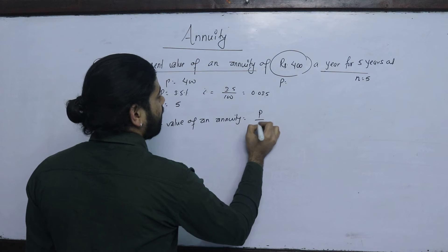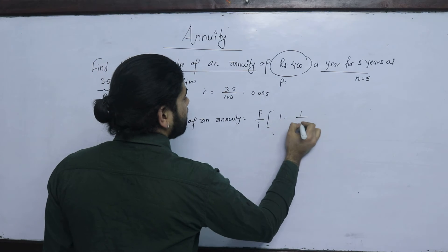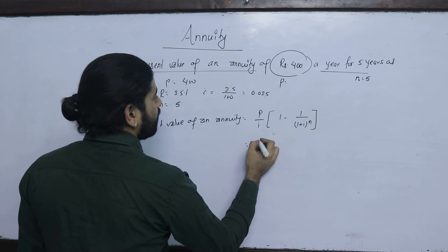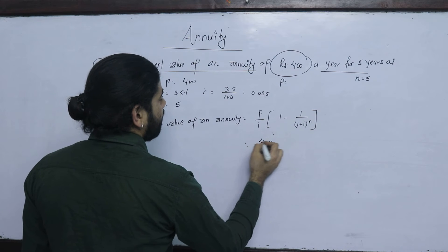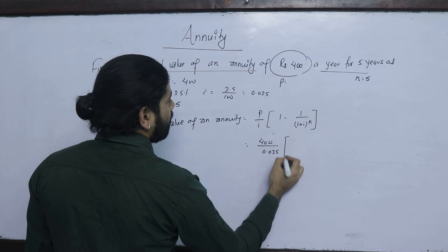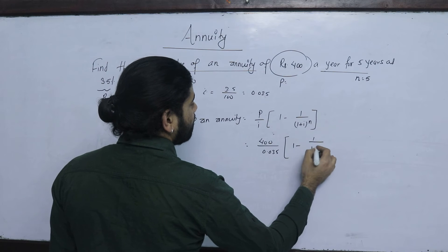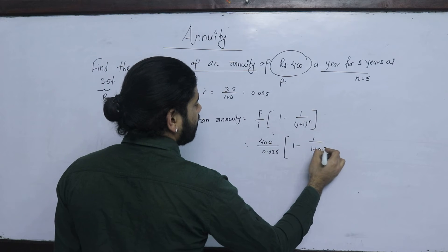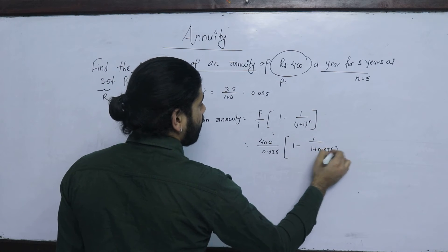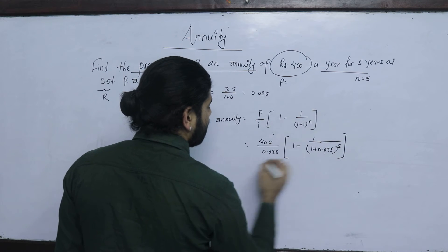The present value of NUT formula is: PV = P upon i, multiplied by 1 minus 1 plus i to the power n. Substituting: P = 400, i = 0.035, 1 minus 1 upon (1 plus 0.035) to the power 5.